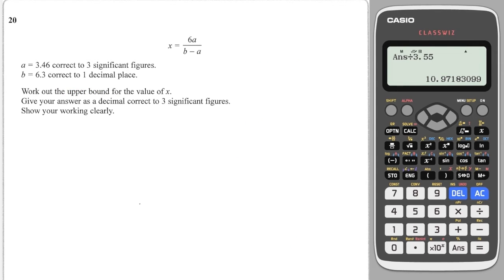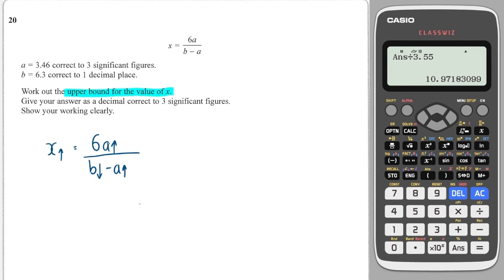Next question is a bit tricky because we've got A occurring twice. It asks us for the upper bound of X, so X needs to be upper. I want my A value to be upper to make it as large as possible, and then I want my denominator to be as small as possible. So that means I'm going to want B to be as small as possible, but because we're taking away A on the denominator and I want the denominator to be small, I'm going to want to take away as much as I possibly can. So I want A to be upper as well, which is handy because we can only sub in one A, and we're going to choose A upper.